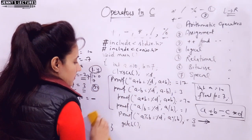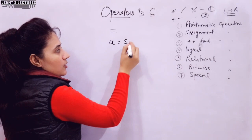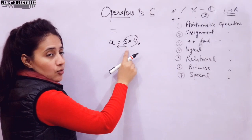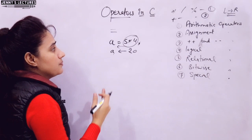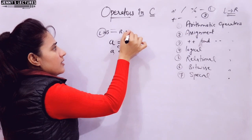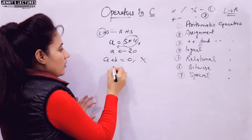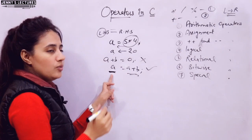Next is the assignment operator, which is equal to (=). It is used to assign values from the right-hand side to the left-hand side. For example, A = 5 means the value 5 is assigned to variable A. Or if we have A = 5 into 4, the expression on the right is evaluated first — giving 20 — and then assigned to A. The left-hand side of the assignment operator must be a variable. Writing A plus B = 0 is illegal. You can write A = A plus B — on the right side you can use any expression, constant, or variable, but the left side must be a variable.